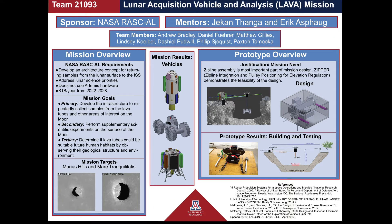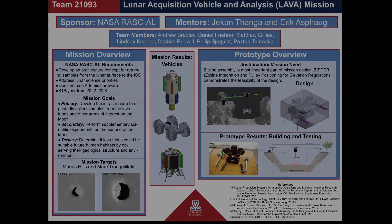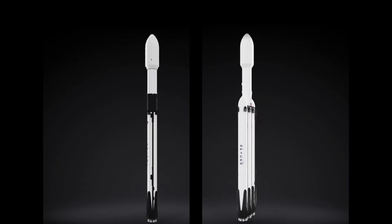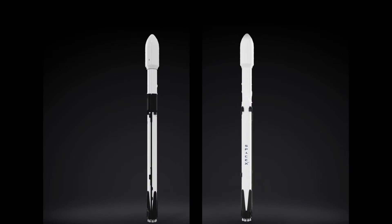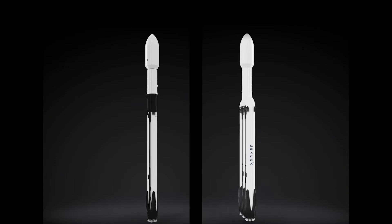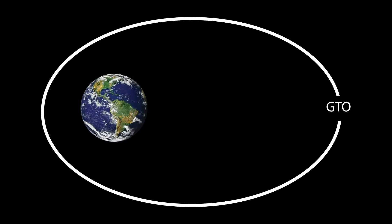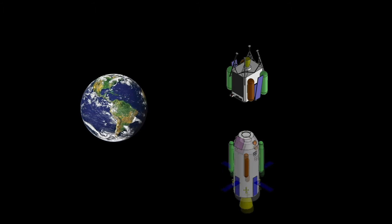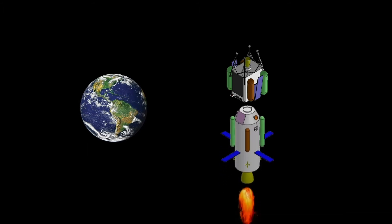The Lunar Acquisition Vehicle and Analysis, or LAVA, is a repeatable sample return mission that uses multiple spacecraft to explore the lunar lava tubes. Our mission utilizes two SpaceX Falcon rockets to individually launch an orbiter and a lander into geostationary transfer orbit, where they will rendezvous before traveling to low lunar orbit.